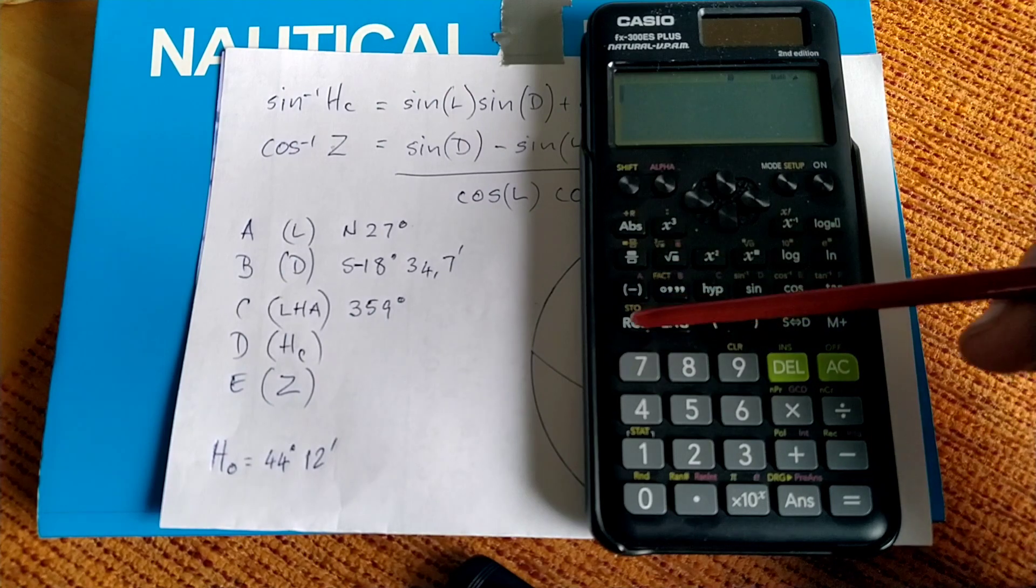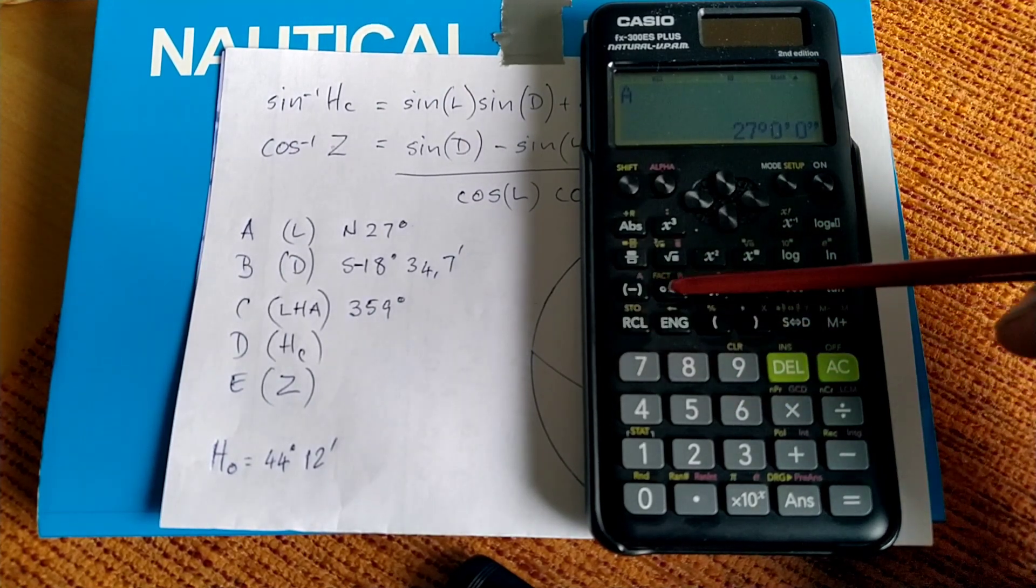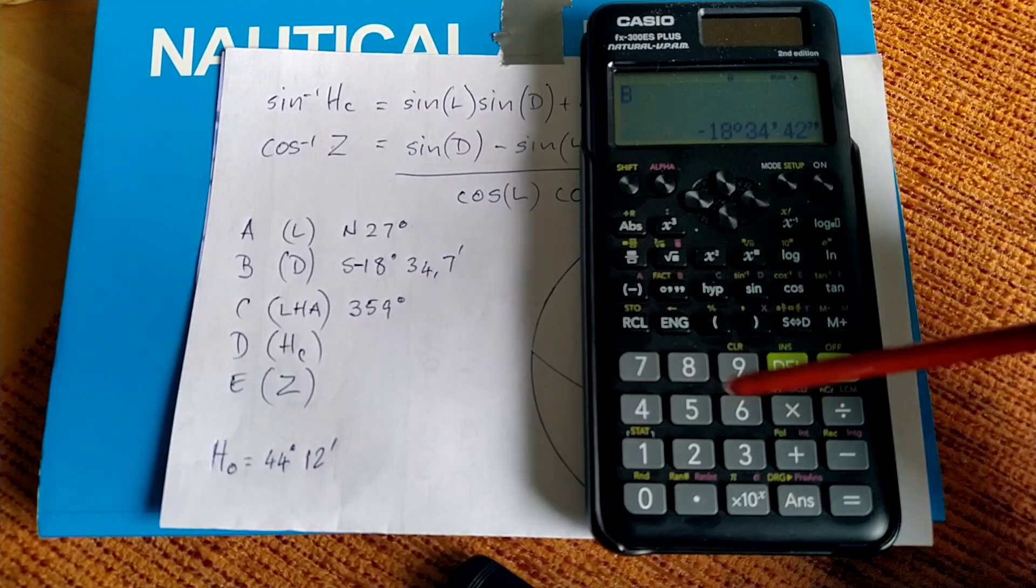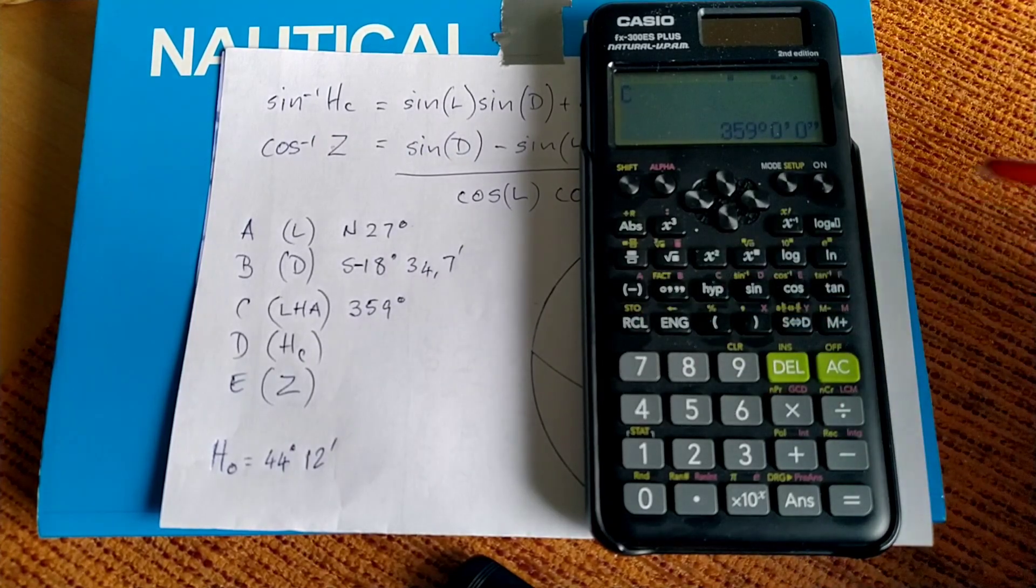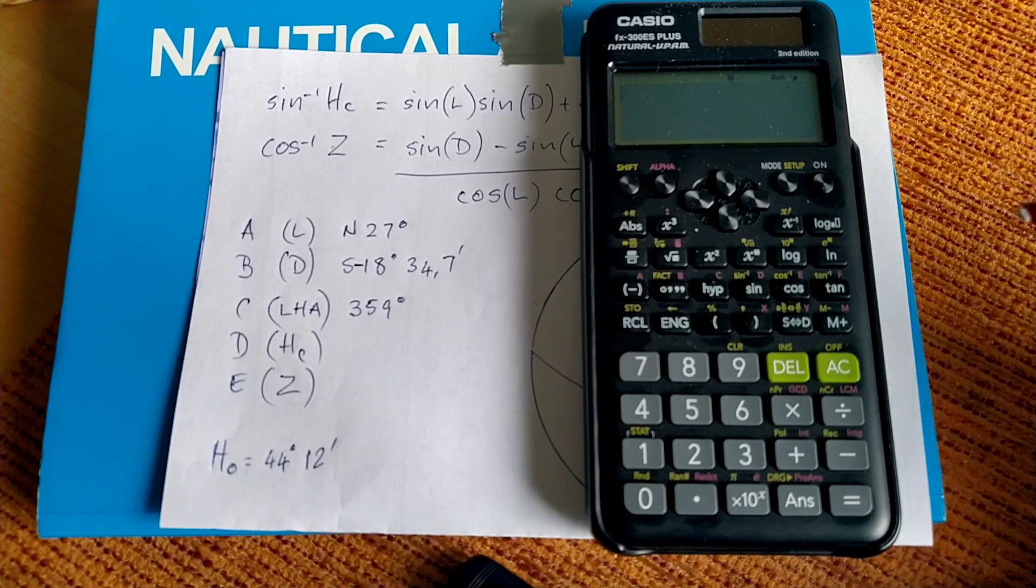So let's just recall, recall A. There we go. That's our latitude, recall B, our contrary name, declination, recall C. And then we have our local hour angle. And now we can calculate and solve HC.